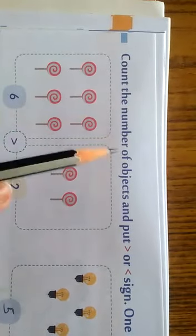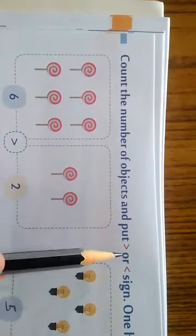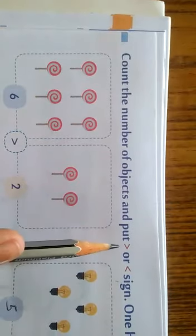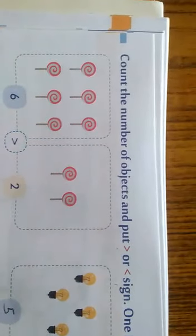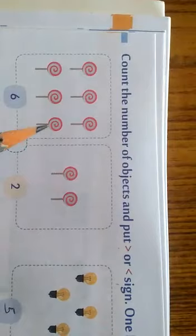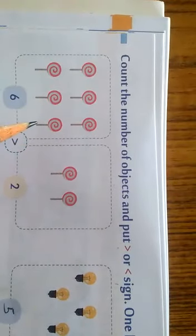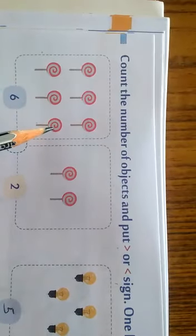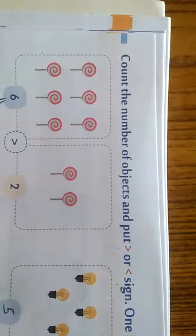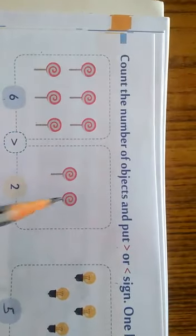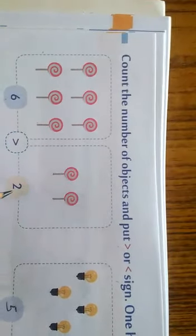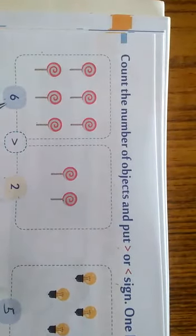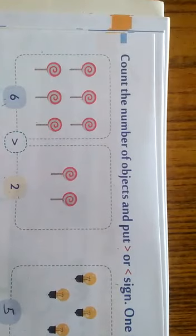Look at the question: count the number of objects and put the sign. You have to first count the objects and then put the sign for greater than, less than, or equal to. Look at the first picture: count 1, 2, 3, 4, 5, 6 — write 6. Next: 1, 2 — write 2. Which one is greater? 6. So we write the greater than sign. Look at the second picture: count 1, 2, 3, 4, 5 — write 5. Next: 1, 2, 3, 4, 5, 6, 7, 8 — write 8. Which one is greater? 8. So we put the sign.